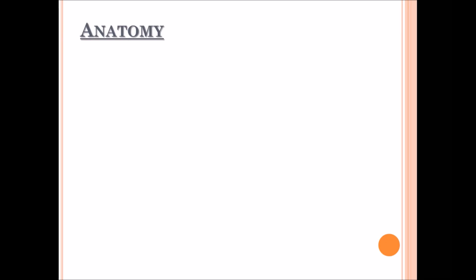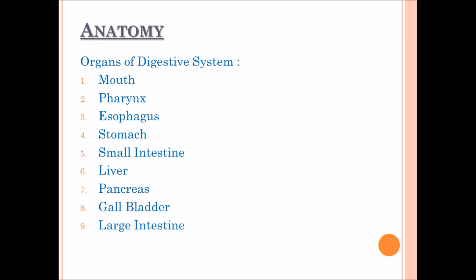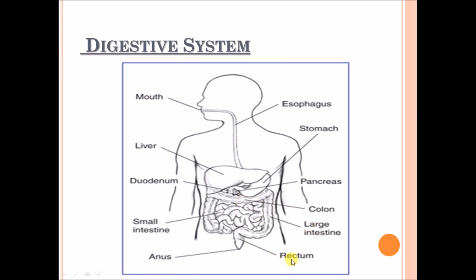Now let's discuss the anatomy of the digestive system one by one. The organs are: mouth, pharynx, esophagus, stomach, small intestine, liver, pancreas, gallbladder, and large intestine. In the picture, you can see the whole digestive system — mouth, esophagus, liver, stomach, pancreas, colon (part of the large intestine), rectum, small intestine, and the anus at the end.